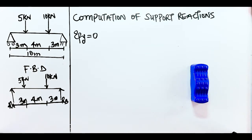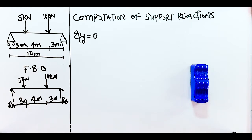Now that we've successfully drawn our free body diagram, we move to the next step: applying the three equations of equilibrium. We start with summation of Fy and then summation of moments. We skip summation of Fx because there are no horizontal forces here — it equals zero, so it's almost always neglected.